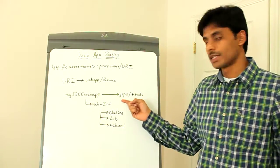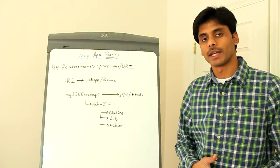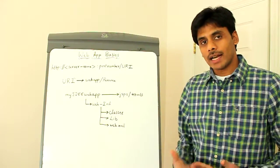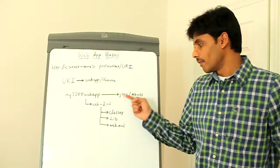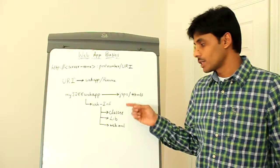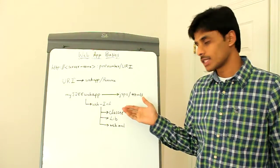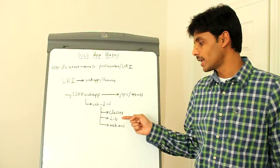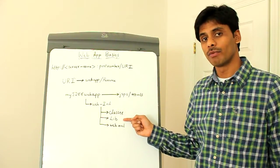By default the classes folder and the lib folder go onto the web containers class path. So every time your JSP pages or any other web components you might use are using a class that you came up with, the web container like Apache Tomcat or WebLogic will try to find those classes under the classes folder first and then in the jar files in the lib folder.